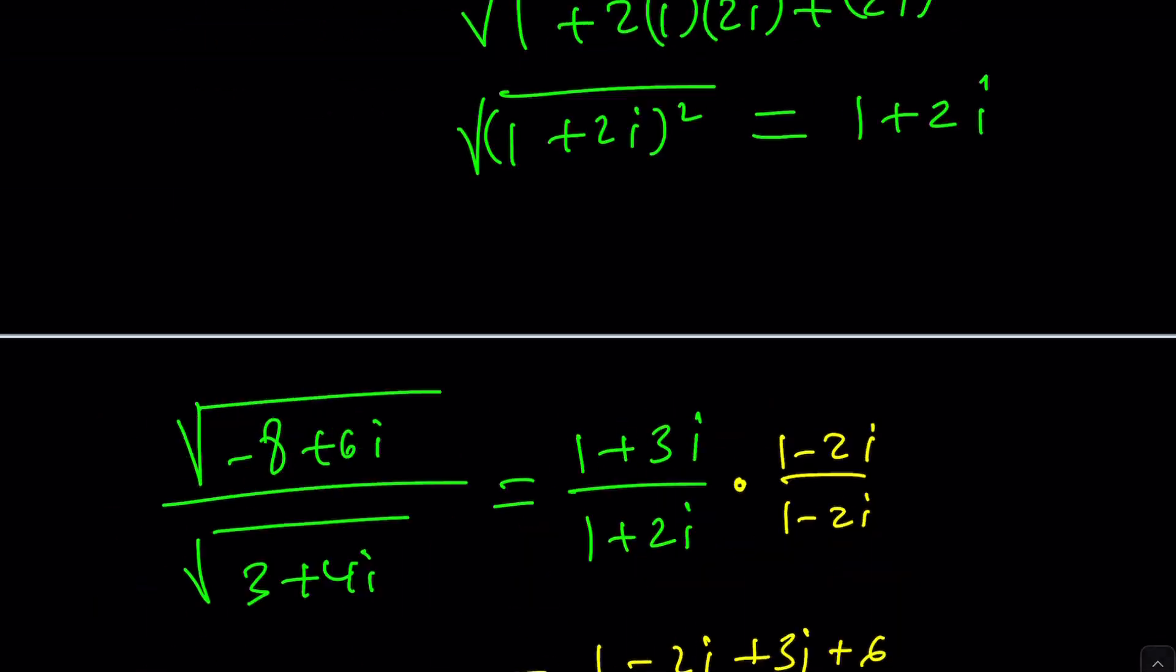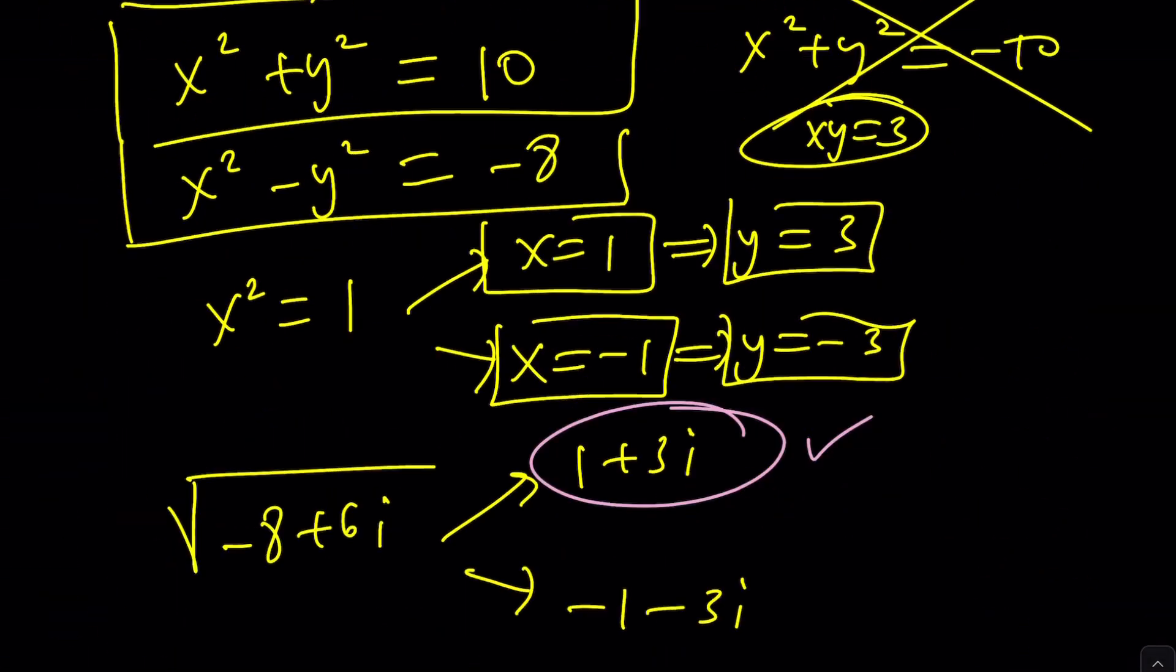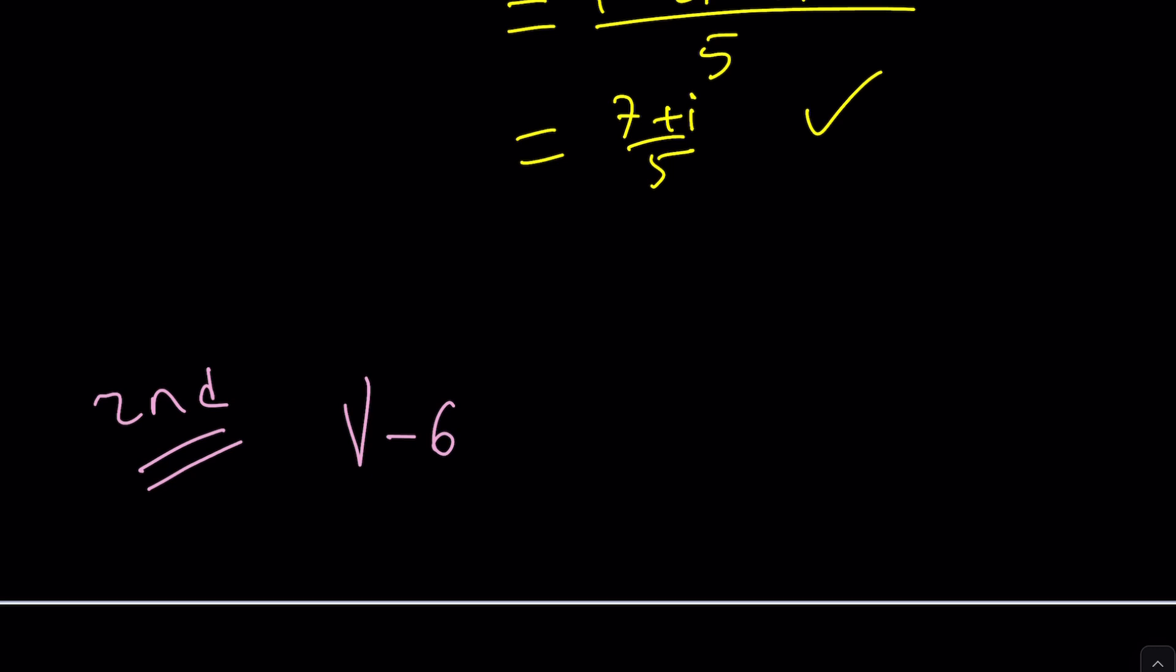Wait a minute. I forgot. Very forgetful. Right? Negative eight plus six i. Never mind. It starts with negative eight. Oops. The answer was right there. And the other one is three plus four i. Right? Awesome.